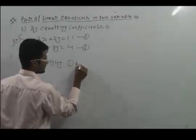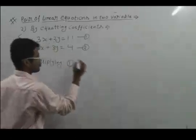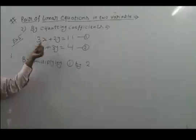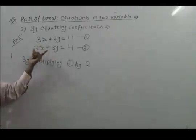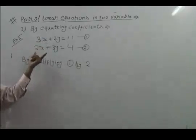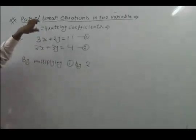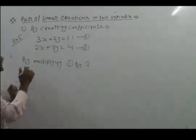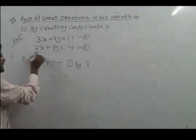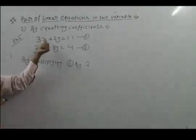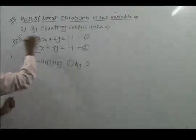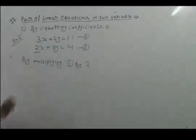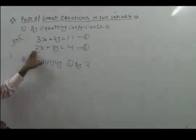By multiplying equation number 1 by 2, it gives 6x; and multiplying equation number 2 by 3, it also gives 6x — so equal x-coefficients will be there. What you can do is inversely multiply: multiply this coefficient (3) with this equation and multiply this coefficient (2) with this equation — inversely. This will give you the same coefficients.